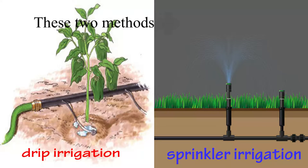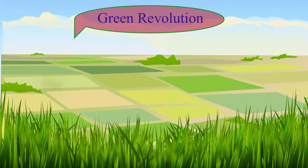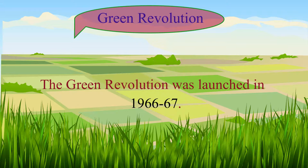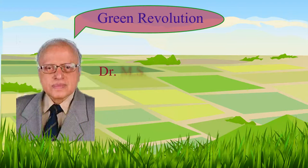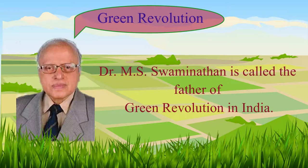These two methods are widely used in the drought affected areas. To overcome the food shortage in India, the Green Revolution was launched in 1966-67. Dr. M.S. Swaminathan is called the father of Green Revolution in India.